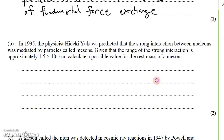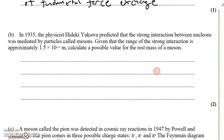In 1935, physicist Hideki Yukawa predicted that the strong interaction between nucleons was mediated by particles called mesons. Given the range of the strong interaction at approximately 1.5 × 10⁻¹⁵ meters, calculate the possible values for the rest mass of a meson.